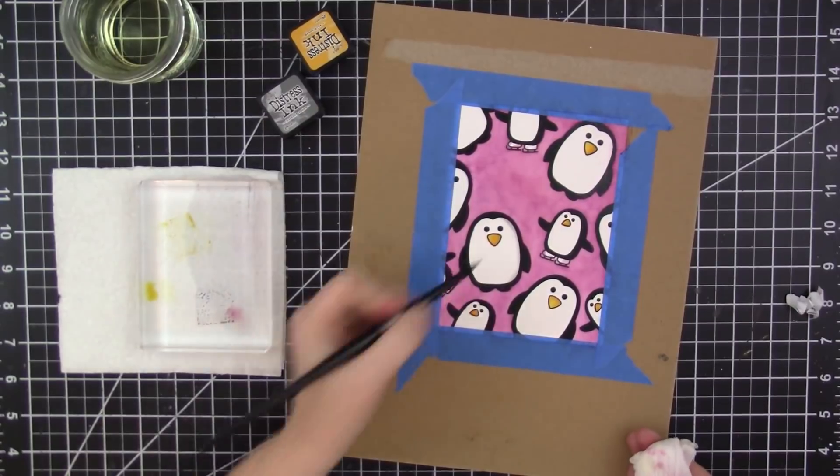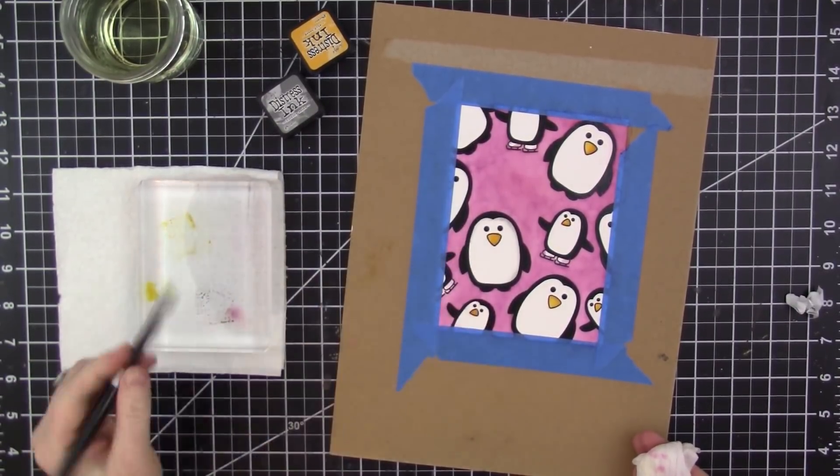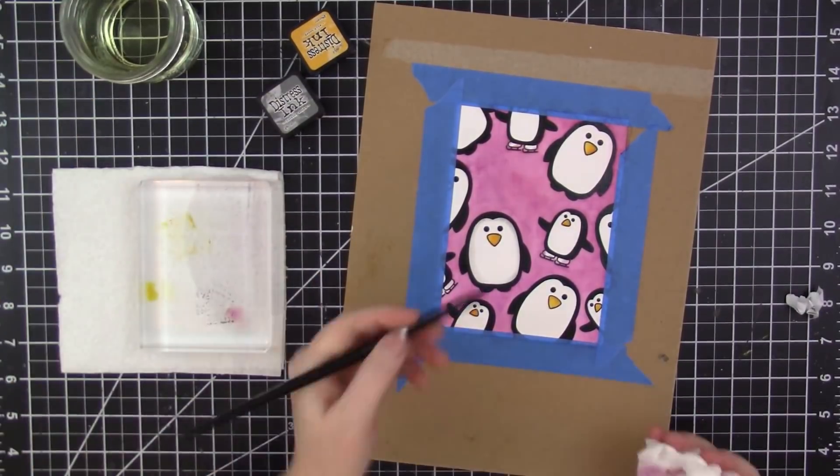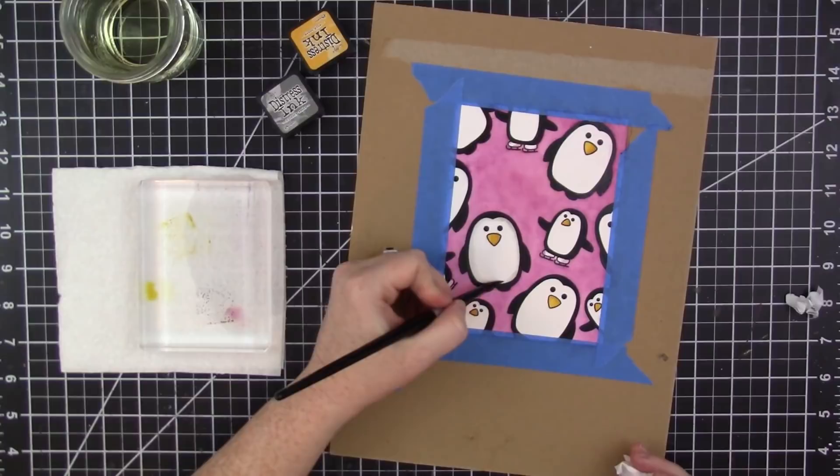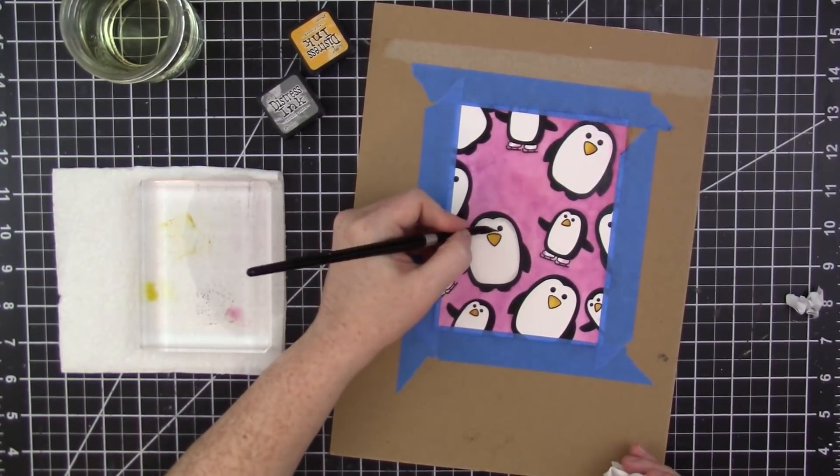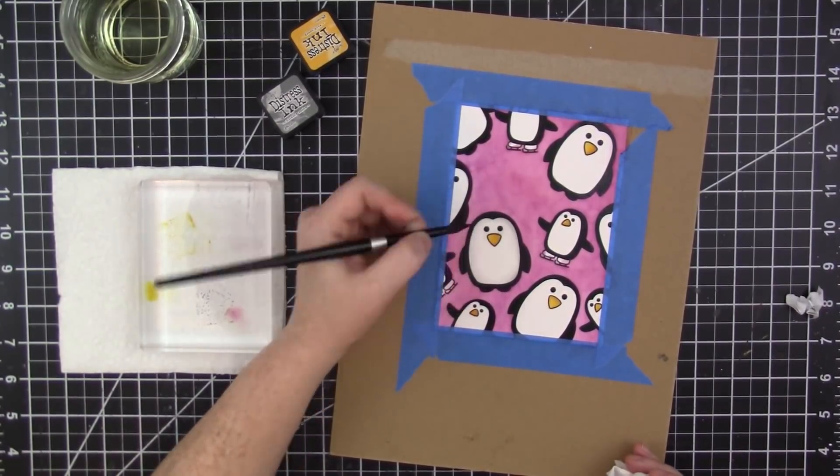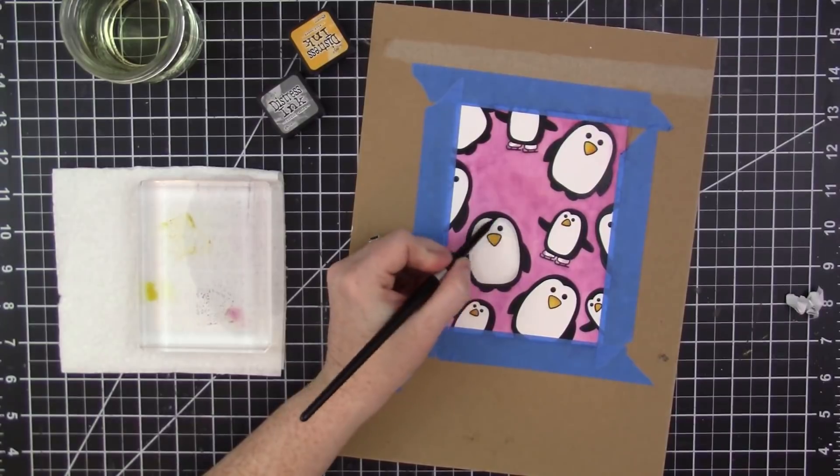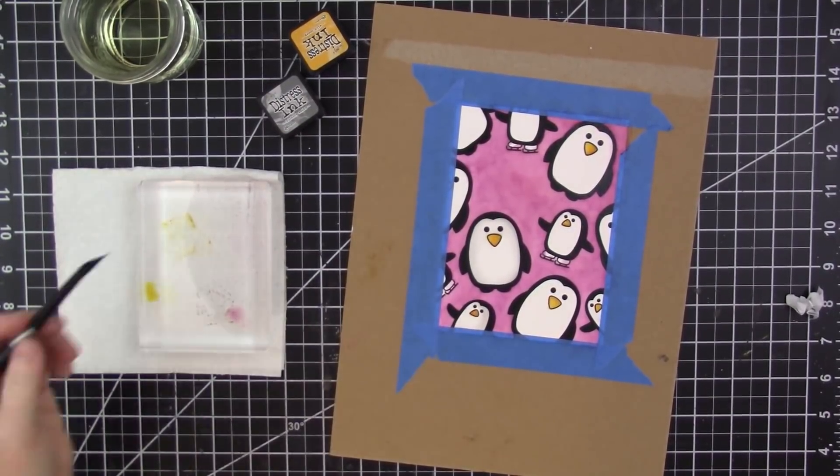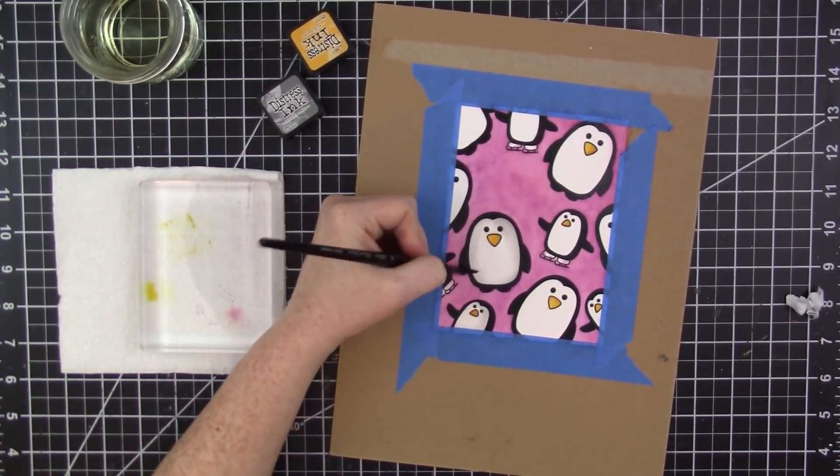Which is nice because then I don't have to be super super precise with the color application. But one thing I'm really learning with watercolor is that it really does just have a mind of its own and you kind of just have to let it do what it's gonna do. If I had used something like markers for the penguins, then I definitely would have had more control, but I really like that watercolory look.